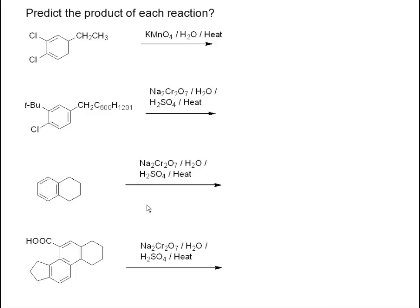What you should do to put yourself in the frame of mind for an exam is to pause the tape and try to complete the answer on your own, then restart when you're ready. In each case, we're looking to oxidize any side chain that contains benzylic hydrogens. In the top case, we're going to cleave the C-C bond and produce the corresponding carboxylic acid. The chlorines aren't going to be affected — they go along for the ride.